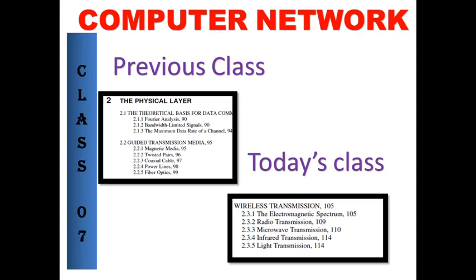Good morning to all. In computer networks, today's class is going to be about wireless transmission. In the previous classes, we studied about the physical layer — the theoretical basis for data communication — where we studied Fourier analysis, data rate of the channel, and guided transmission media. Transmission is of two types: guided and unguided. In guided, the transmission is done through wire; if not through wire, it is called wireless transmission.